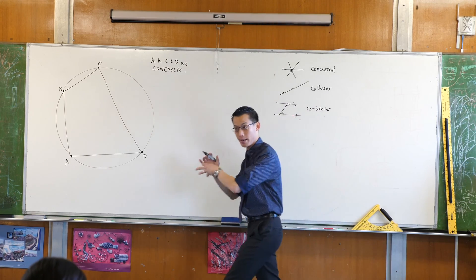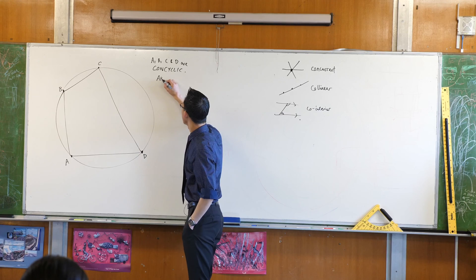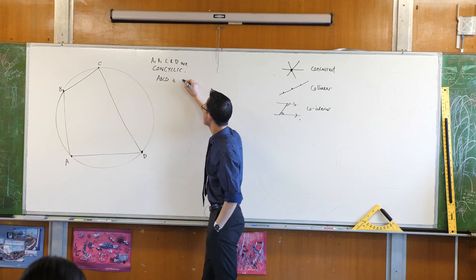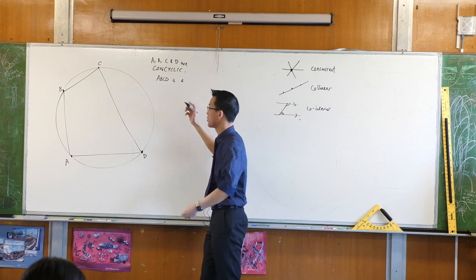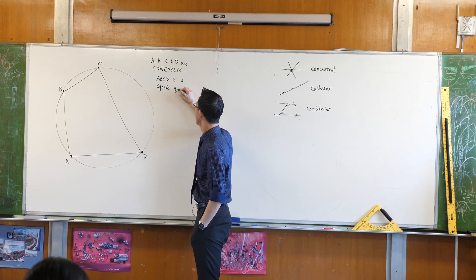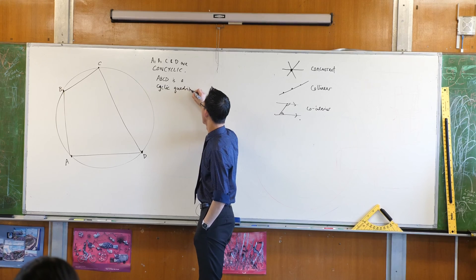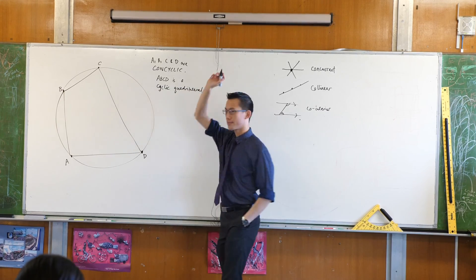So therefore, the quadrilateral A, B, C, D is a, because it's on a circle, a cyclic quadrilateral. It's not just any quadrilateral, it's a cyclic quadrilateral, okay?